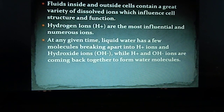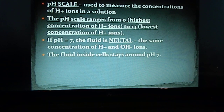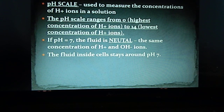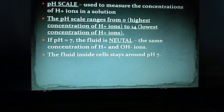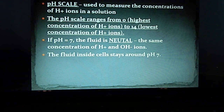Since hydrogen ions can influence the function and structure of cells, scientists developed a pH scale that is used to measure the concentrations of hydrogen ions in a solution. The pH scale ranges from zero, which means it has the highest concentration of hydrogen ions, to fourteen, which means it has the lowest concentration of hydrogen ions.